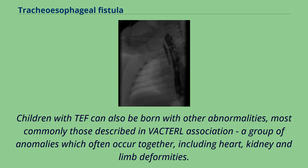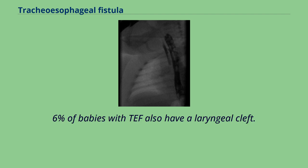Children with TEF can also be born with other abnormalities, most commonly those described in the VACTERL association — a group of anomalies which often occur together, including heart, kidney, and limb deformities. Additionally, 6% of babies with TEF also have a laryngeal cleft.